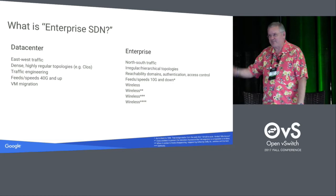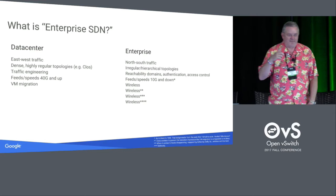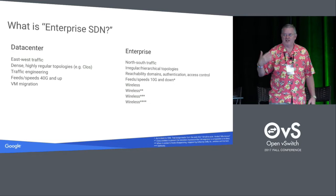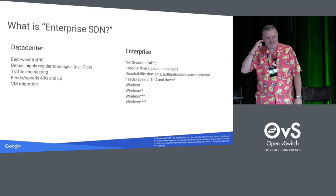I'll start by talking about what is Enterprise SDN. I've been at Google for a while. My first decade, I worked in production networks and did data center stuff. There, the problem was mainly east-west traffic, very dense, highly regular topologies, in particular in very well-engineered spaces. The feeds and speeds now are 40 gig and up — back when I was doing this, 10 gig was a big deal.